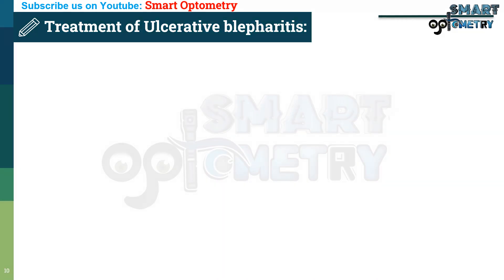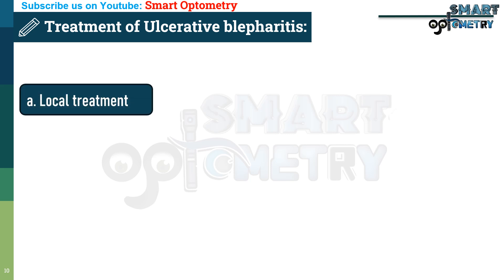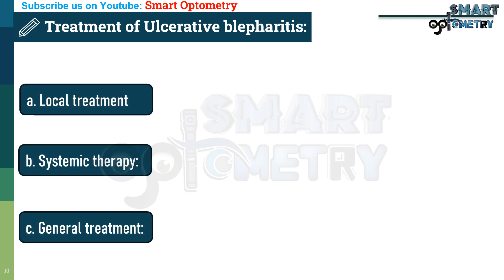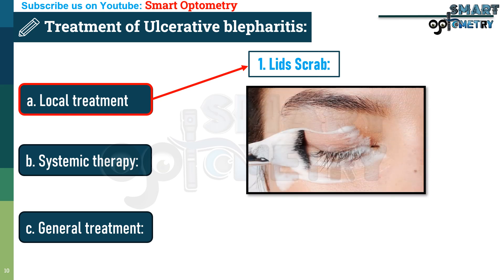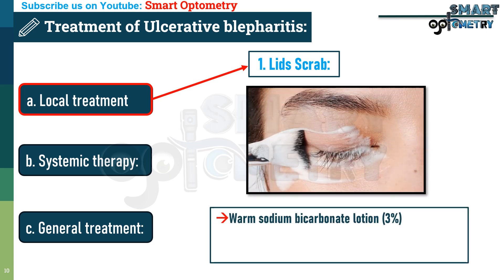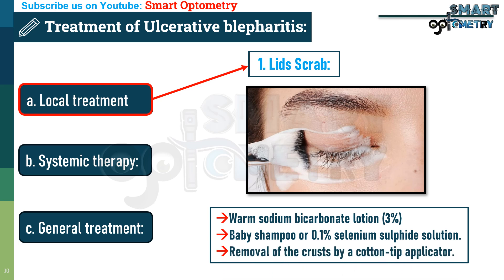Treatment of ulcerative blepharitis: this is a severe form requiring local, systemic, and general treatment approaches. Local treatment — lid scrub: warm sodium bicarbonate lotion 3% is applied to the lid margin to soak the crusts. Alternatively, baby shampoo or 0.1% selenium sulfide solution may be used, followed by removal of the crusts with a cotton-tip applicator.